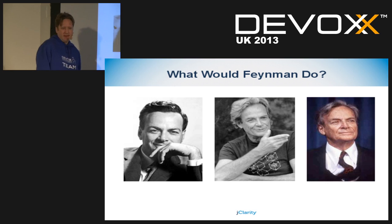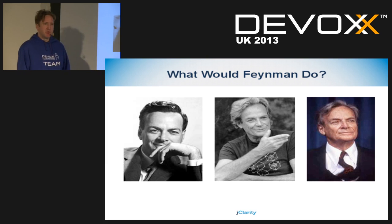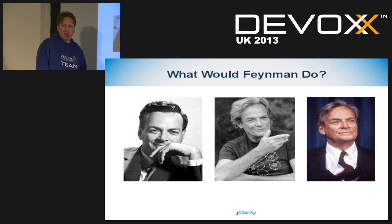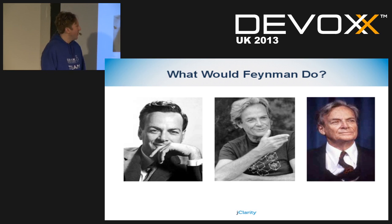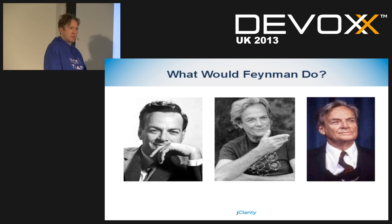So what would Feynman do? Feynman would say: it's all well and good that we have this order-of-magnitude improvement — but why? What is it about the way these projects are run that actually delivers it? Something is causing the aeroplanes to land, but we don't know what it is. So we have to find out. The more I dug into this and thought about how these projects were run, the more I started to see parallels with Feynman and his work.